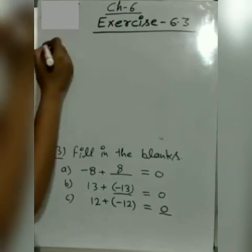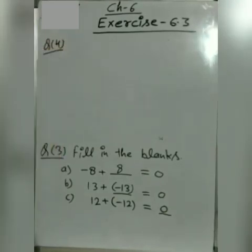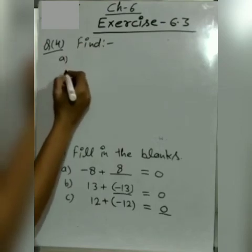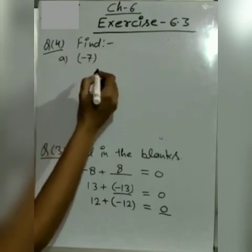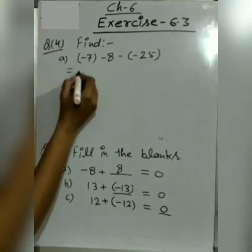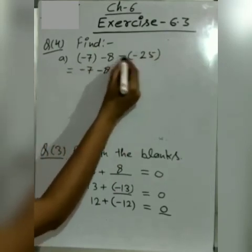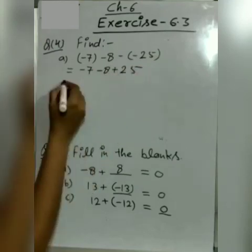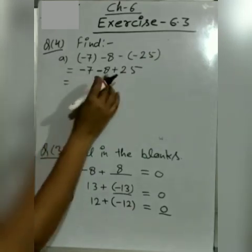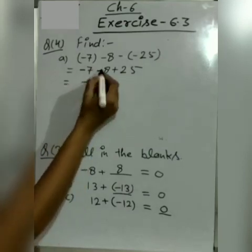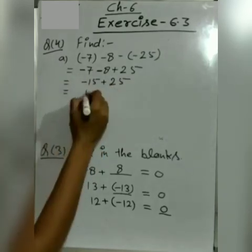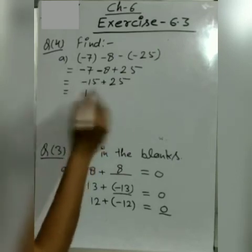Next question is question number 4. Find minus 7 minus 8 minus minus 25. Minus 7 as it is, minus 8 as it is, and minus minus becomes plus 25. Plus 25. 7 and 8 both have same sign, minus sign, so we will add them. 7 and 8 becomes 15. Sign will be minus. Plus 25. Minus 15 plus 25 equals 10.